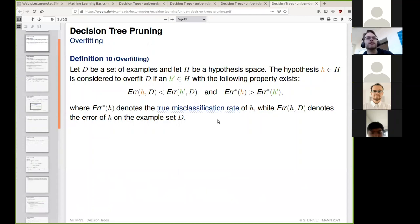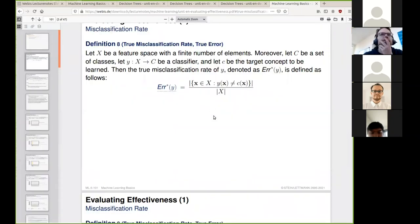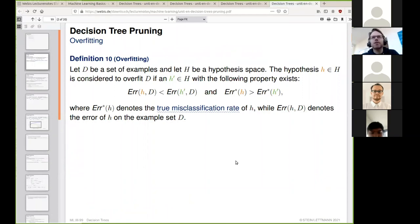As a quick recap, what is overfitting? Overfitting with regards to hypothesis space and a given example set is if we have a hypothesis h whose error is smaller on the training set than when we calculate the true misclassification rate on the entire feature space. True misclassification rate is very close to the truth but difficult to measure because we do not have a perfect overview of the feature space.